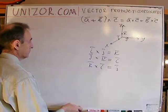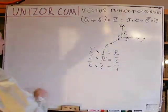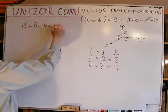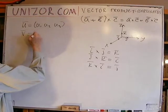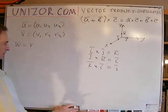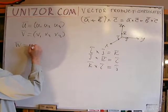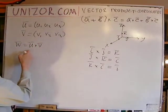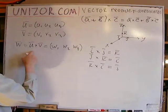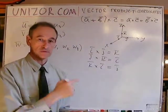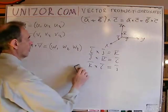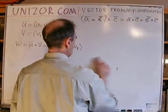So let's say we have two vectors. Vector u, which has coordinate representation u1, u2, u3. And vector v, which is v1, v2, v3. Vector w would be their vector product. What we would like to know is how w1, w2, w3 are expressed in terms of u1, u2, u3 and v1, v2, v3. That's the purpose of this theoretical exercise.